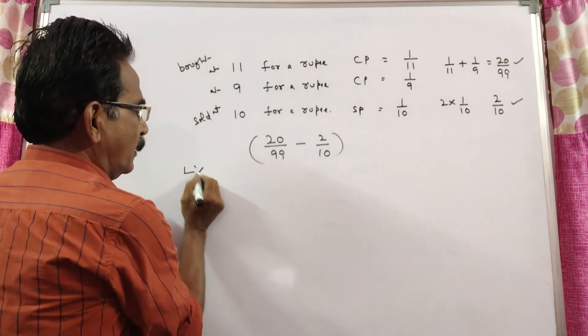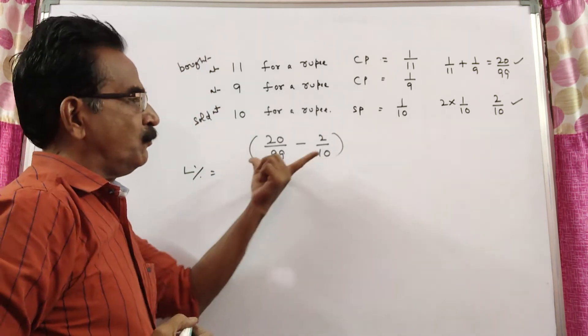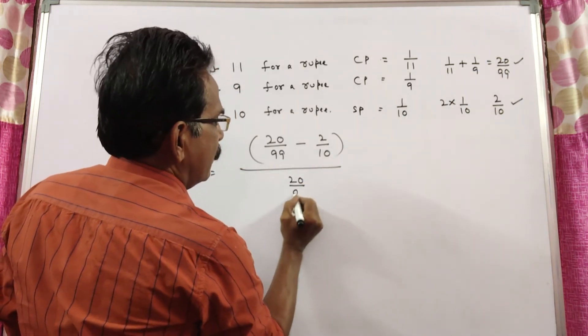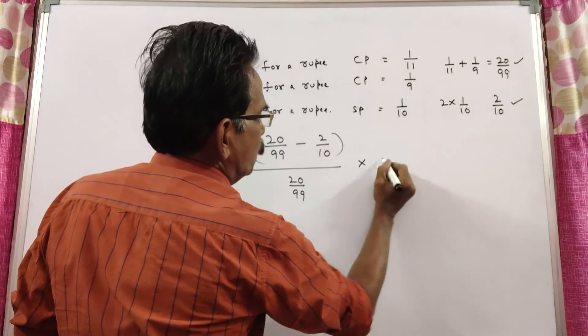We want loss percent. Loss percent is equal to loss by cost price, 20 by 99, loss by cost price into 100.